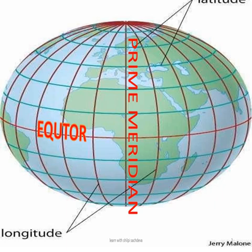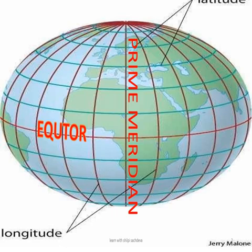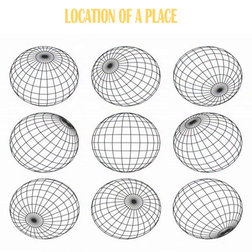The equator is at 0 degree latitude, is the longest latitude, and divides the globe into two equal halves — the Northern Hemisphere and the Southern Hemisphere. The Prime Meridian is at 0 degree longitude and divides the globe into the Eastern Hemisphere and Western Hemisphere. Thus these two sets of imaginary circles are drawn around the globe to help us locate places.